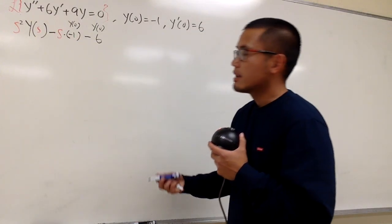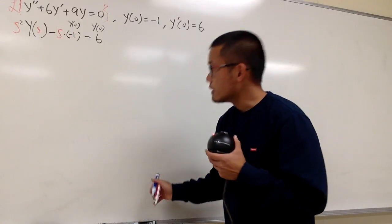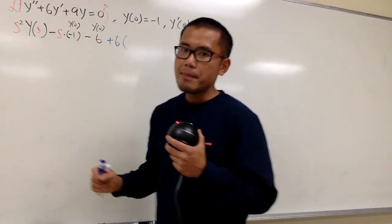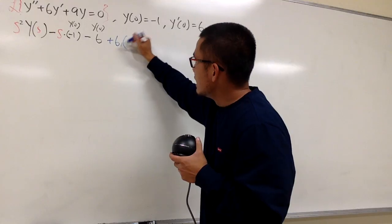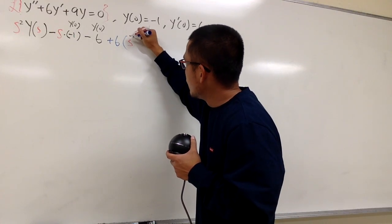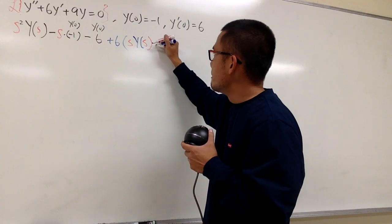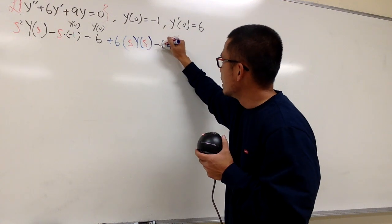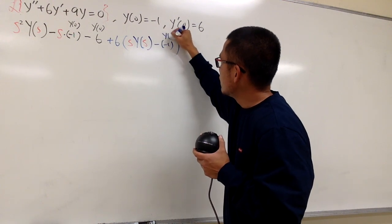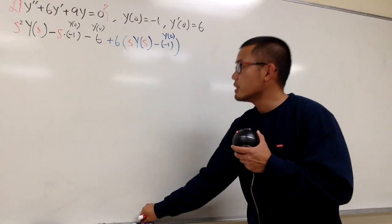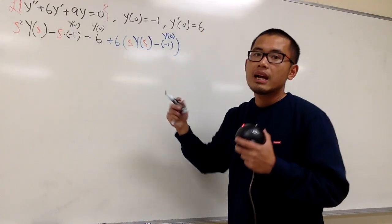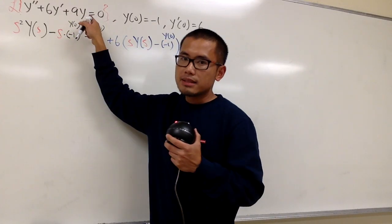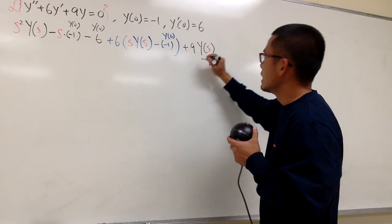Let me indicate this in blue. Let me put down plus 6, and then open the parentheses. For y prime, we will end up with s times Y(s), and then minus y(0), which is negative 1 — so let me indicate this as negative 1. This is y(0). So the blue portion is for the middle term right here. At the end, we have plus 9y, so we have plus 9. And once you do the Laplace transform of y, you get Y(s). And we are lucky because the right-hand side is just 0, so we have 0 right here.